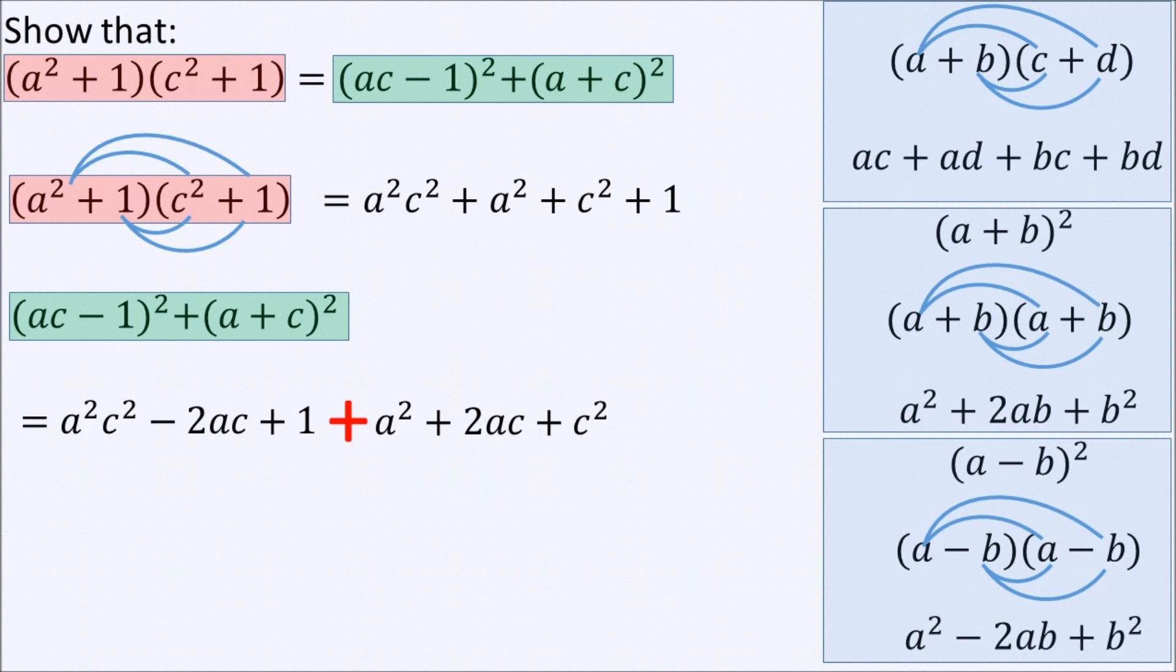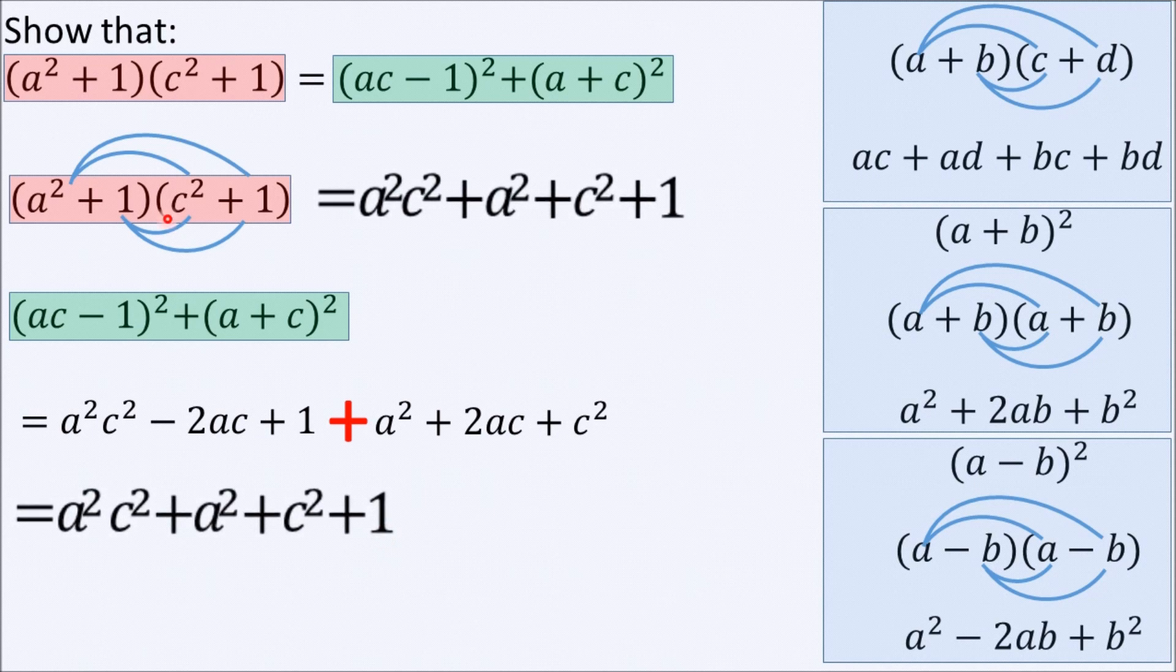Now minus 2AC plus 2AC cancel out and we are simply left with A squared C squared plus A squared plus C squared plus 1. And this is the same as the result of the expansion we did for the brackets highlighted in red. Therefore, we have proven that those two sides of the equation are equal.